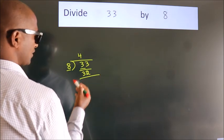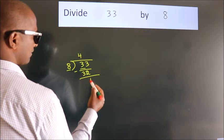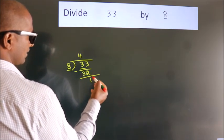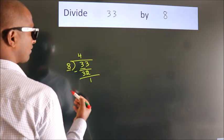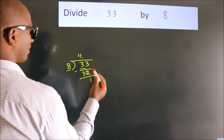Now, we should subtract. We get 1. After this, no more numbers to bring down, so what we do is we put a dot and take 0.